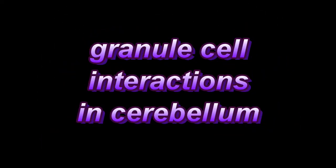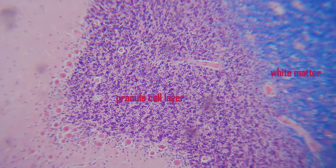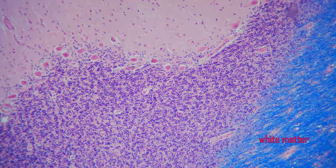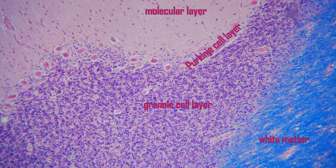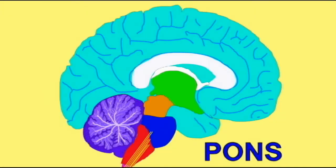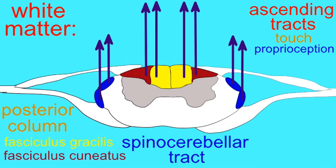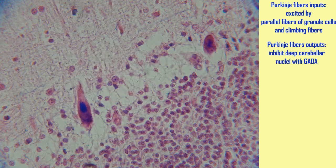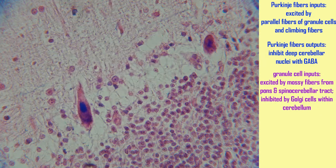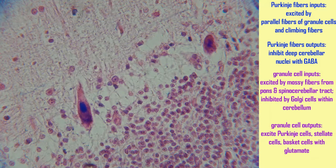In the cerebellar cortex, the granule cell layer contains the densest concentration of neurons in the brain — so many that these granule cells may compose half the neurons in the brain. These granule cells receive their inputs from mossy fibers, which originate in the pons, and also the spinocerebellar tract from the spinal cord. The granule cells can be inhibited by bulge cells, which are also in the granule cell layer of the cerebellar cortex.